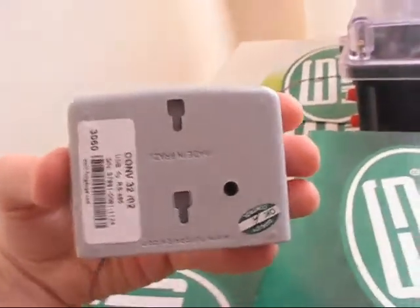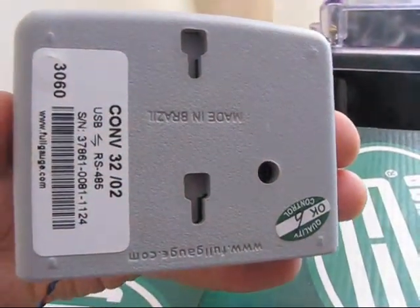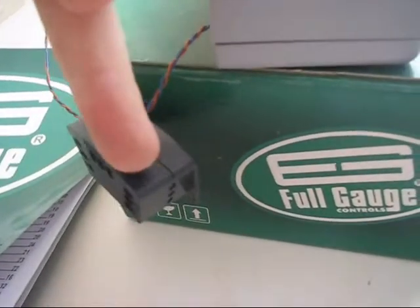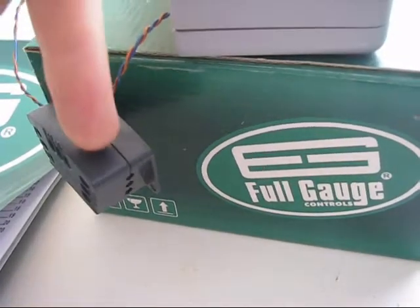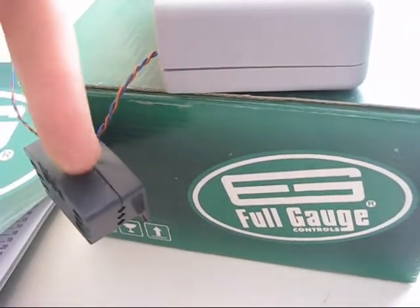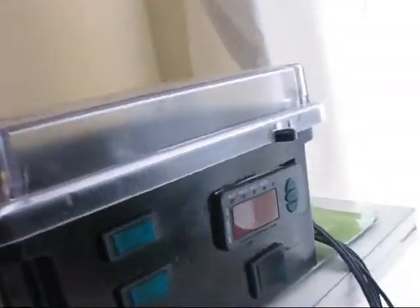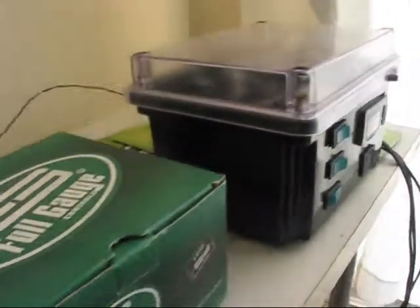This piece of equipment here came with the controller, the temperature controller. It's to connect everything up to the network. The temperature controller, of course, being this here. Let's see what we get in the box here.